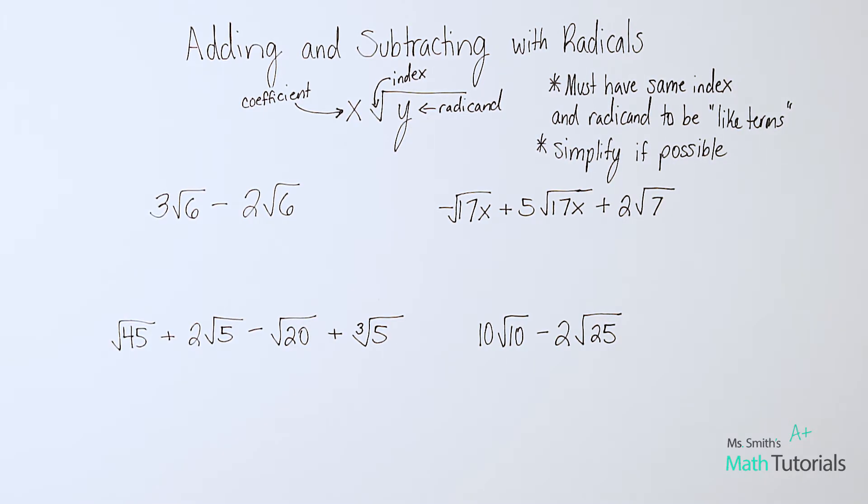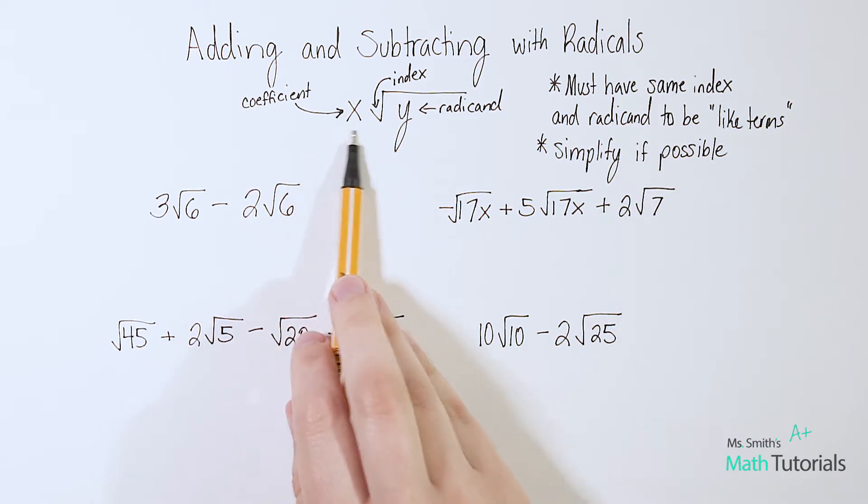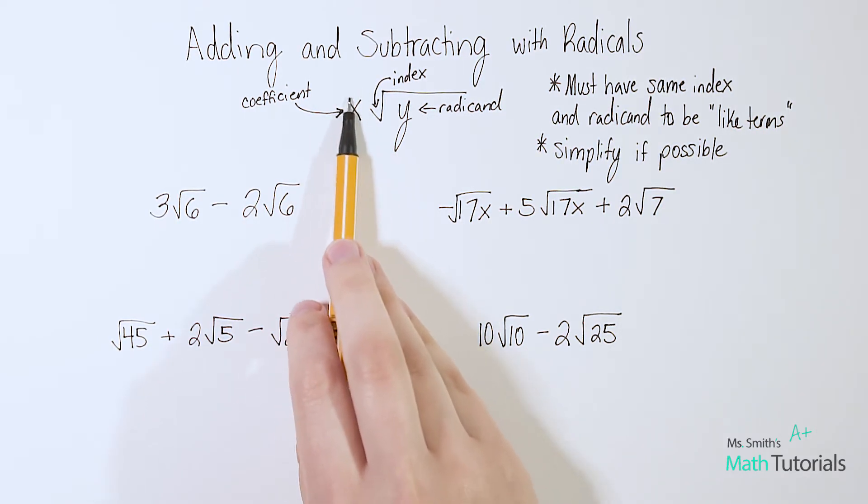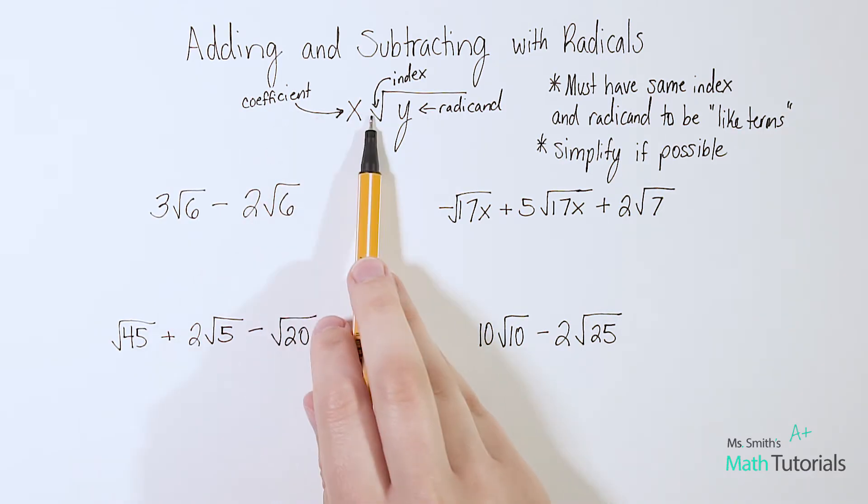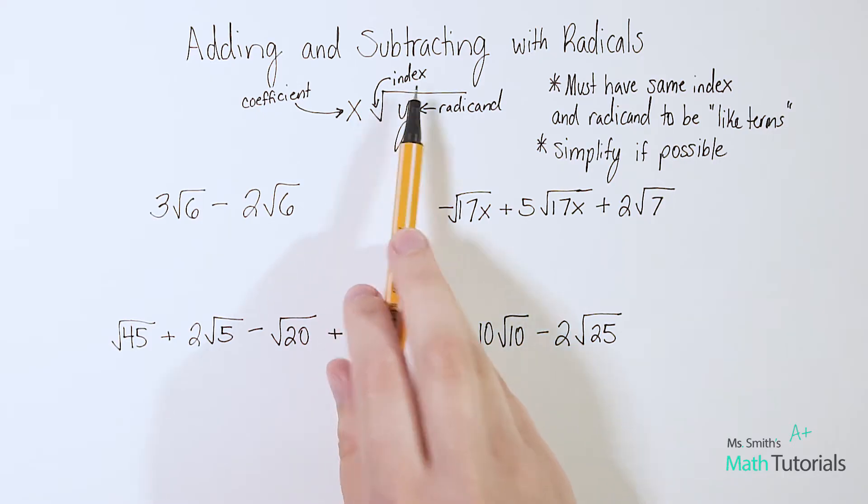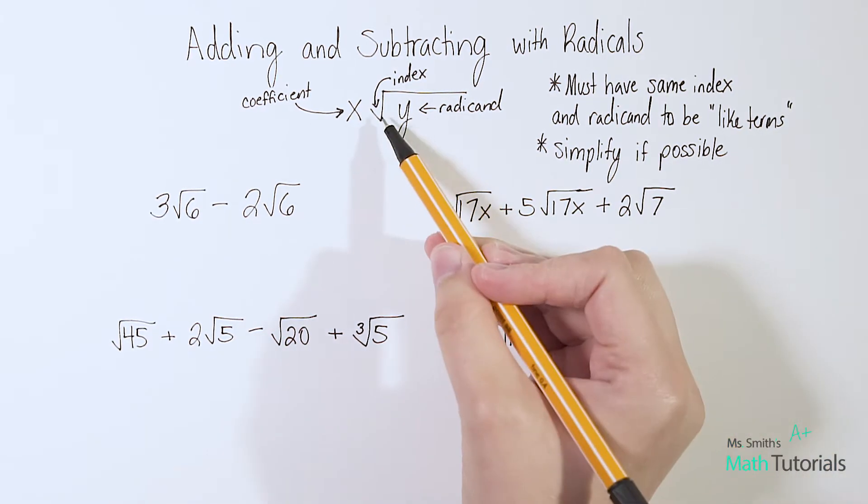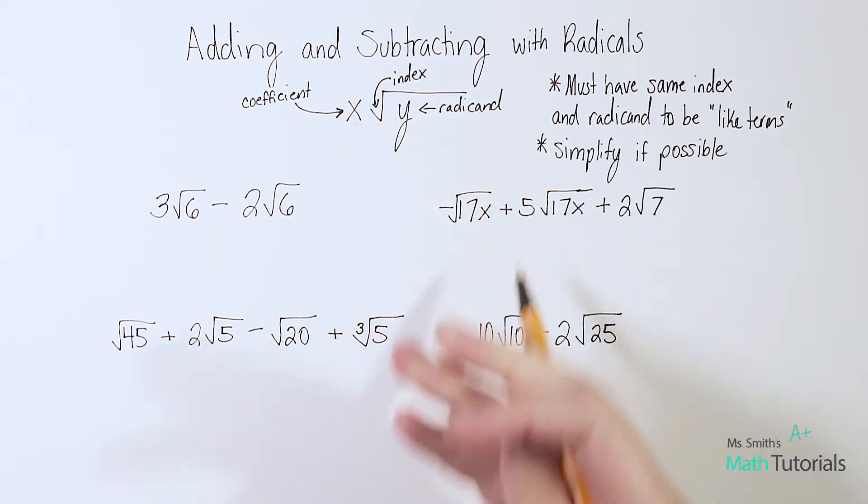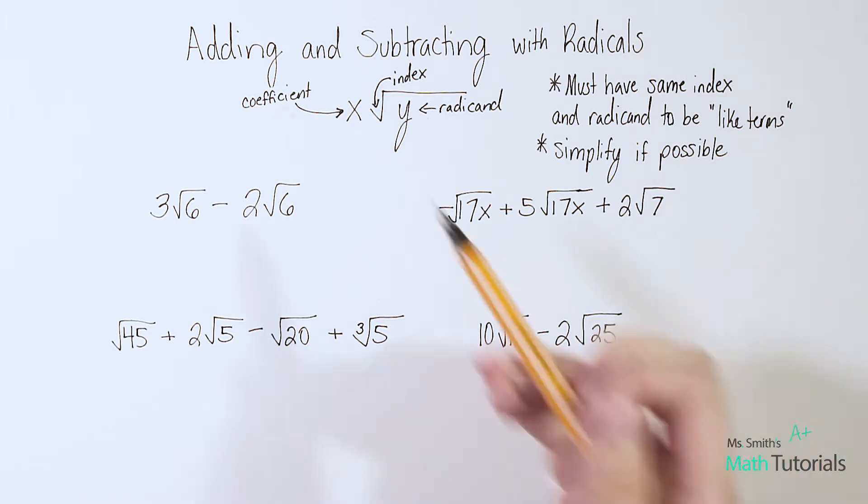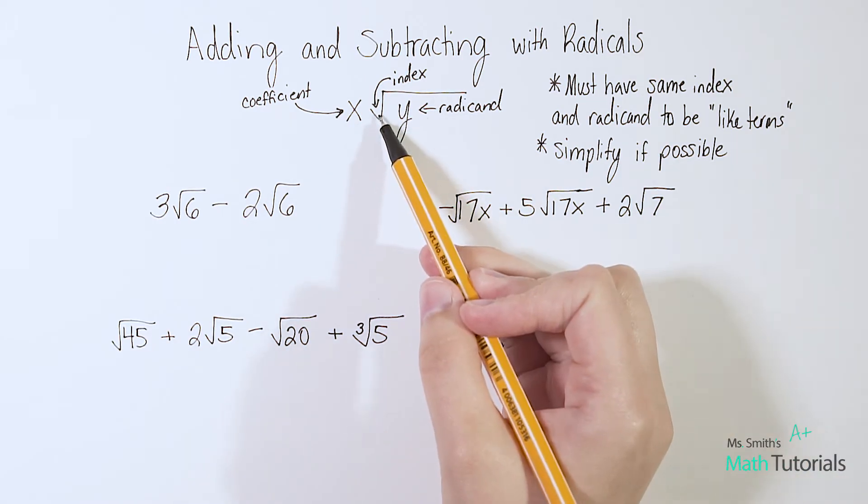So a couple rules we want to lay out to start with. Some words you want to be familiar with. This number or letter on the outside of the radical, that's called the coefficient. Whatever is in this little check, as I call it, it's called the root or the index. So you'll notice right now it's blank. That means there's an understood two there, but sometimes you'll see a three, a four, and anything else, anything above. So that's called the index or root.